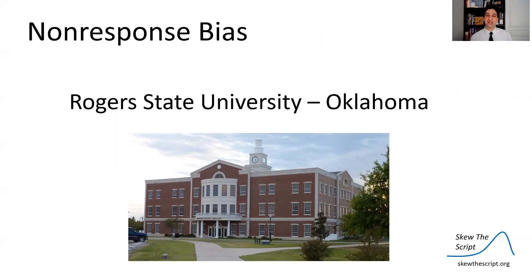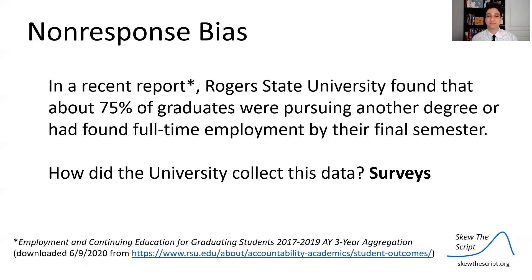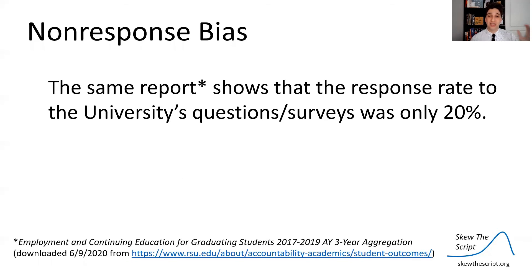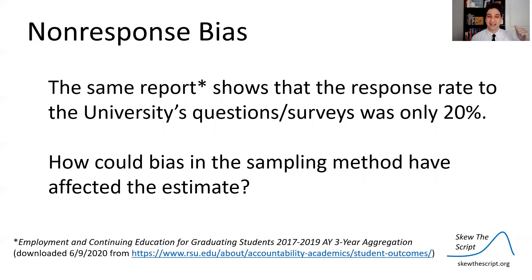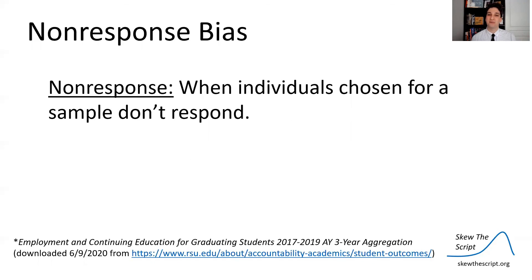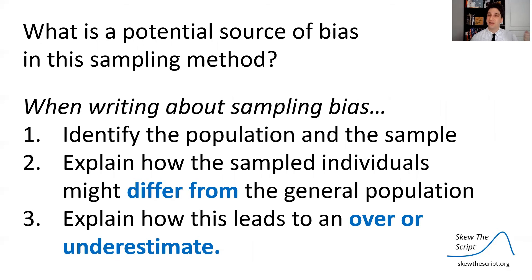Let's look at another example. This is Rogers State University in Oklahoma, a four-year university that awards both associate's and bachelor's degrees. In a recent report, Rogers State University found that 75% of graduates were pursuing another degree or had found full-time employment by their final semester. But how did the university collect this data? They used surveys. The same report shows that the response rate to the university's survey sent to graduates is only 20% — only about a fifth of people they sent the survey to actually bothered to reply. This might lead us to think there's some bad statistics going on here as well. This is an example of non-response bias: when individuals chosen for a sample choose not to respond, leading to bias if those individuals differ from the respondents.